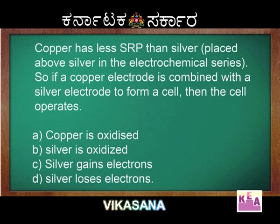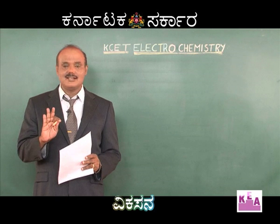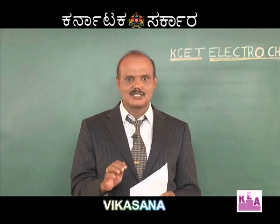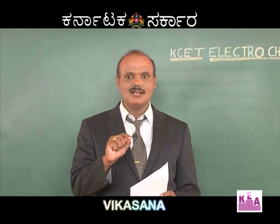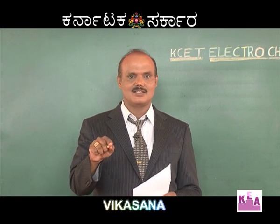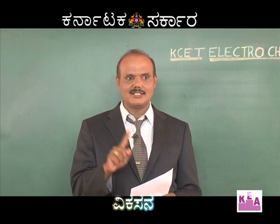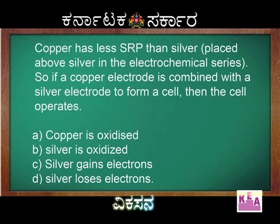Here one ambiguous answer is option C: silver gains electrons. Silver is the cathode, but silver gains electrons is wrong because in the solution it is silver ions that gain electrons. In our option, they have given silver gains electrons, so that is wrong. Copper is oxidized is correct.